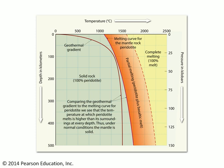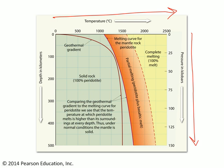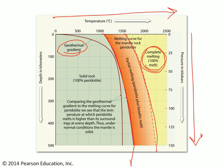Another way to think about this is to look at a pressure-temperature plot for the Earth's interior. Temperature is increasing from left to right, and pressure is increasing from top to bottom. We've got the geothermal gradient — basically how hot the rock is for any given depth — compared to the melting curve for the mantle rock peridotite. Where the peridotite begins to melt versus where it has completely melted defines three domains: the yellow domain is 100% magma, the green domain is 100% solid rock, and the orange domain in the middle is the domain of partial melting.